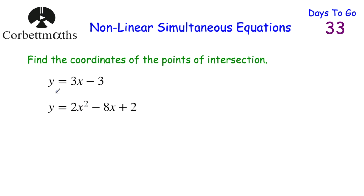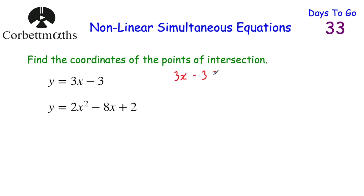I really like these non-linear simultaneous equations when they're in this form — when you've got y equals and y equals. You can just put them equal to each other: substitute 3x minus 3 in place of y, so you get 3x minus 3 equals 2x squared minus 8x plus 2.